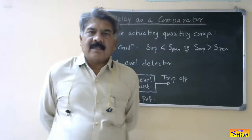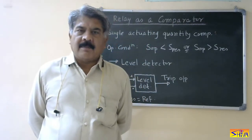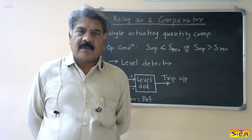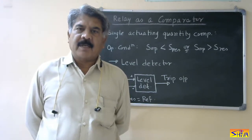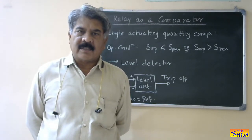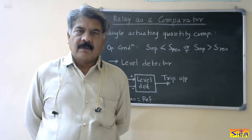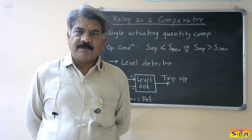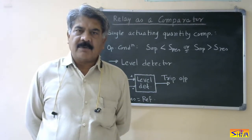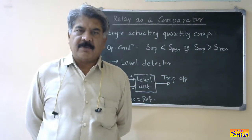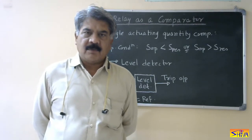Comparators are basically of three types, as far as the number of actuating quantities are concerned. Number one is single actuating quantity. Second, double actuating quantity. And third, multiple actuating quantities.